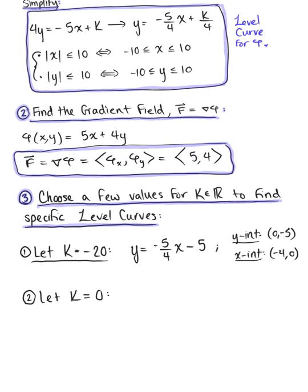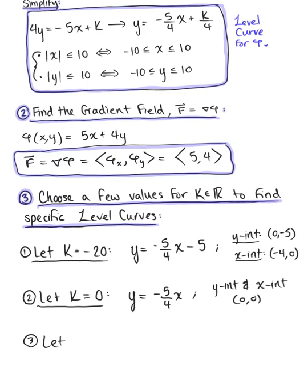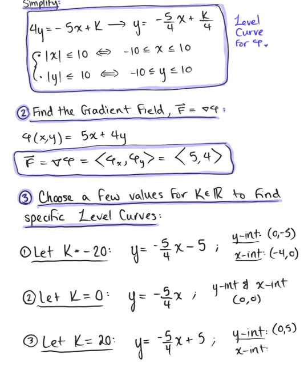Let's let k equal 0. That gives us y equals negative 5/4 x, a diagonal line where both the x-intercept and y-intercept are at the origin (0, 0). For one more, let k equal positive 20. This gives us y equals negative 5/4 x plus 20/4, which is 5. This line has a y-intercept at (0, 5) and an x-intercept at (4, 0). These are our three level curves for the potential function, chosen to be easy to plot.